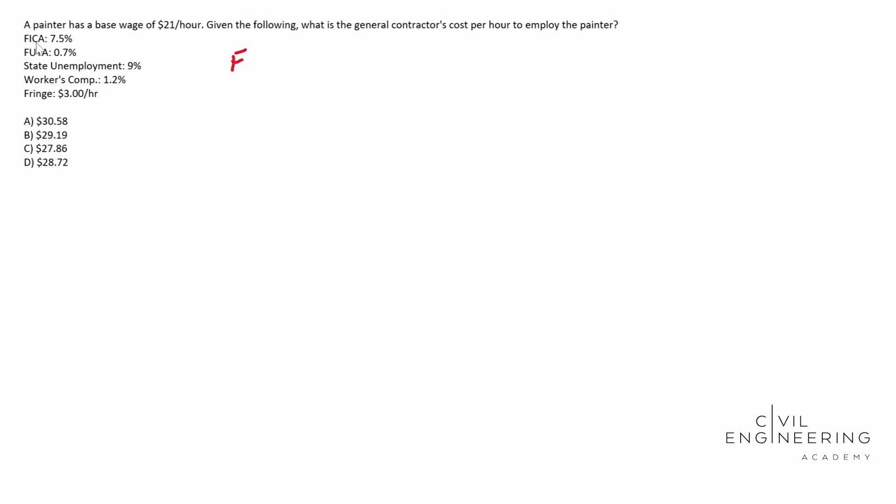So I'm going to label FICA as one of them. And this is 7.5%. So 0.075 times our base wage, which is $21 an hour. So remember it's coming out of our base wage. And that will give us an answer.